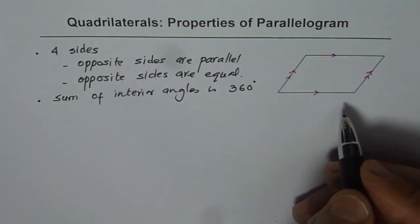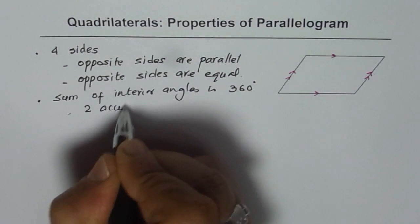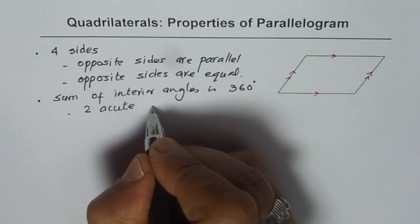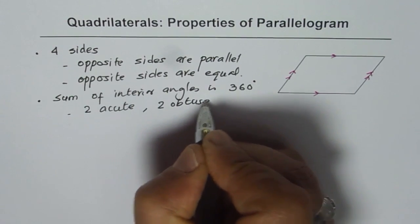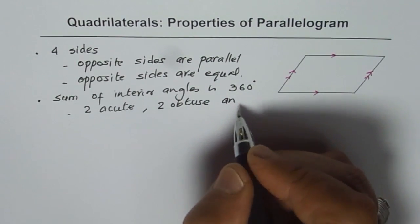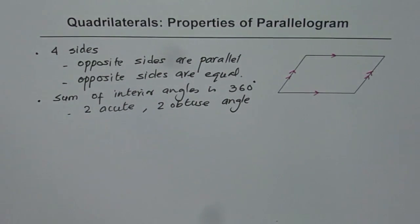Now do we have right angles here? No, not of course. What we have is two acute angles and two obtuse angles. That is what we have. Acute is less than 90 degrees and obtuse is more than 90 degrees.